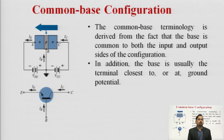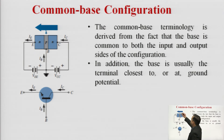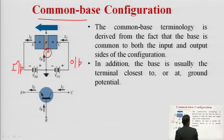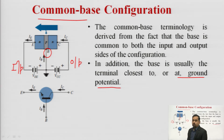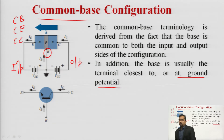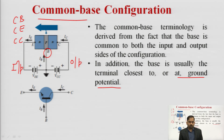The BJT has three different configurations: common base configuration, common emitter configuration, and common collector configuration. 'Common' means that the base terminal is common to both the input side and the output side, or equivalently the base terminal is grounded. We will see all three configurations and their respective advantages.